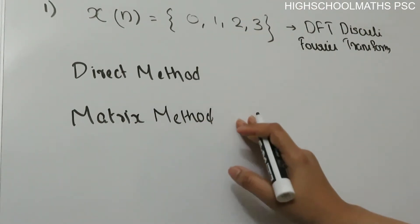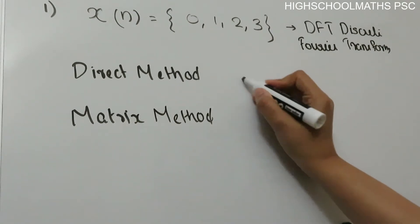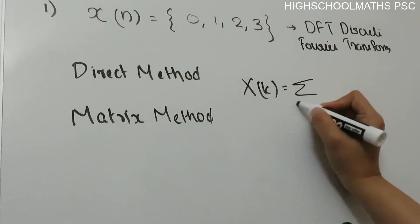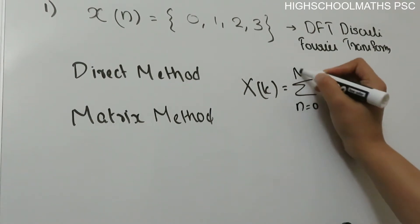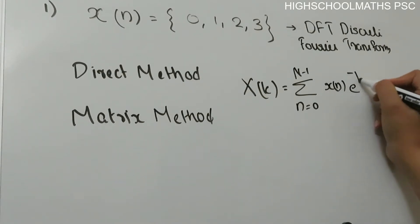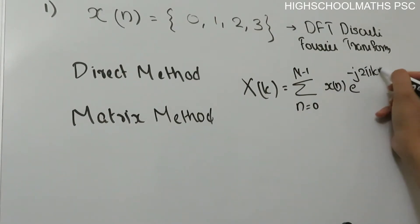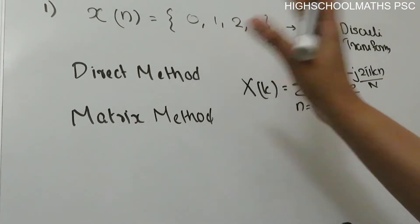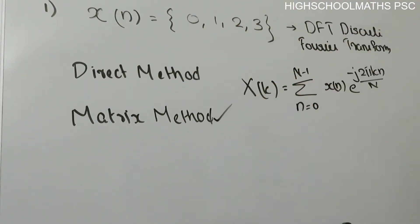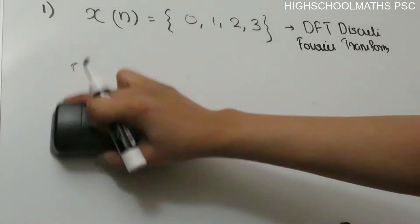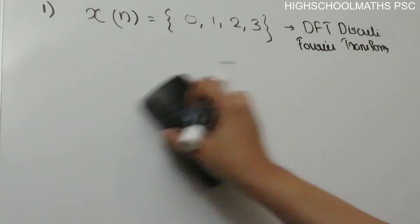We have to convert using the direct method to the matrix. We have to find X(k) using the equation: X(k) = sigma from n=0 to N-1 of x(n) times e raised to minus j*2*pi*k*n/N. We will convert the equation using the matrix method, converting the 4-point sequence using a 4x4 matrix.